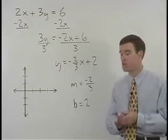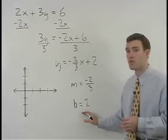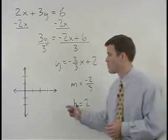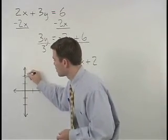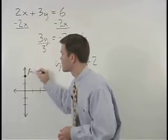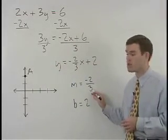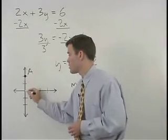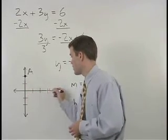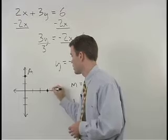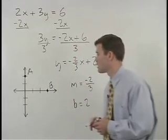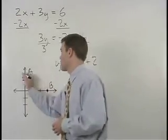To graph the line we would start with its y intercept of 2, up 2 units on the y axis. From there we take our slope of negative 2 thirds. So we go down 2 and to the right 3 to plot our second point and we graph the line.